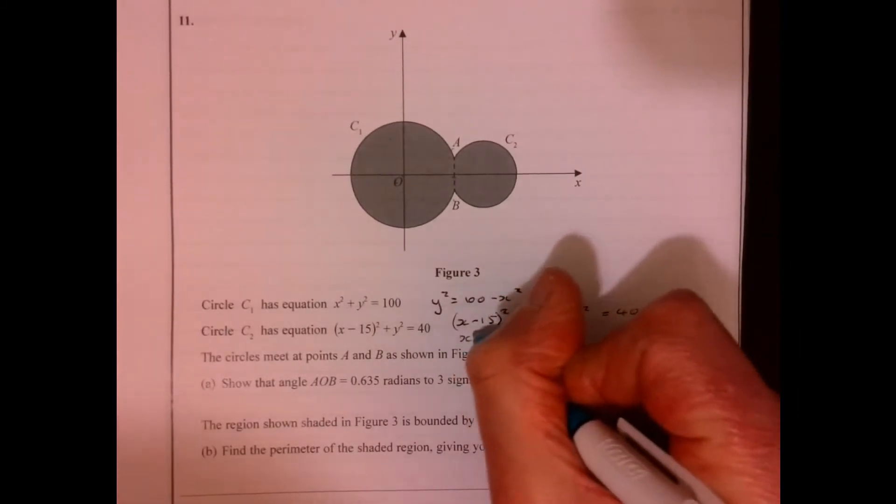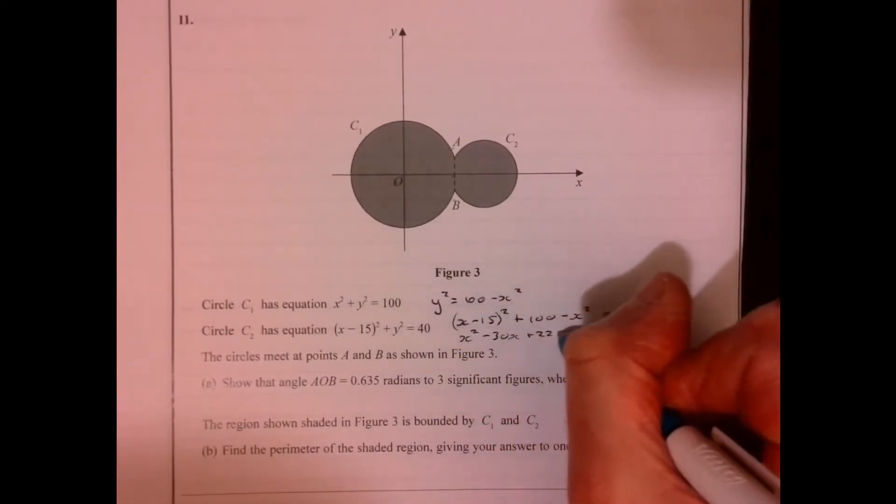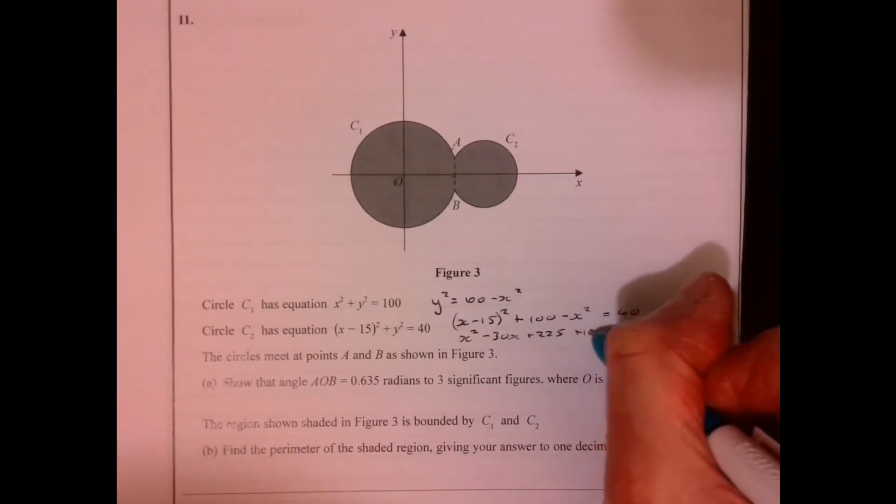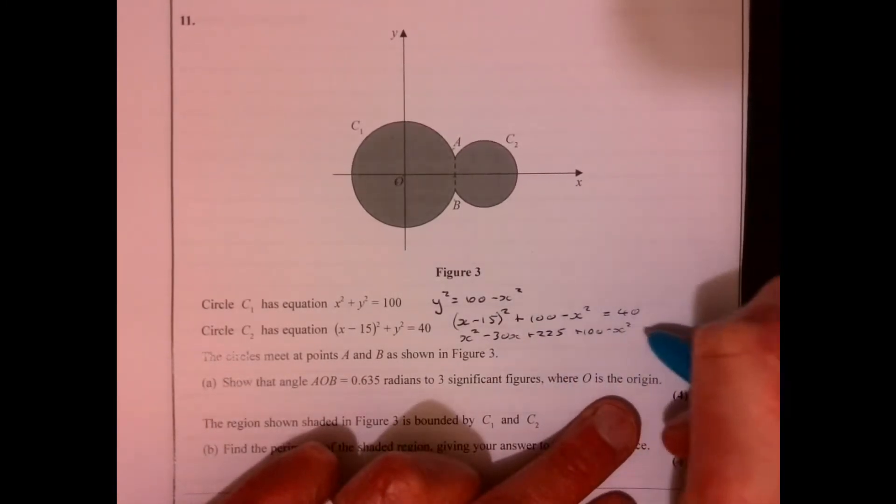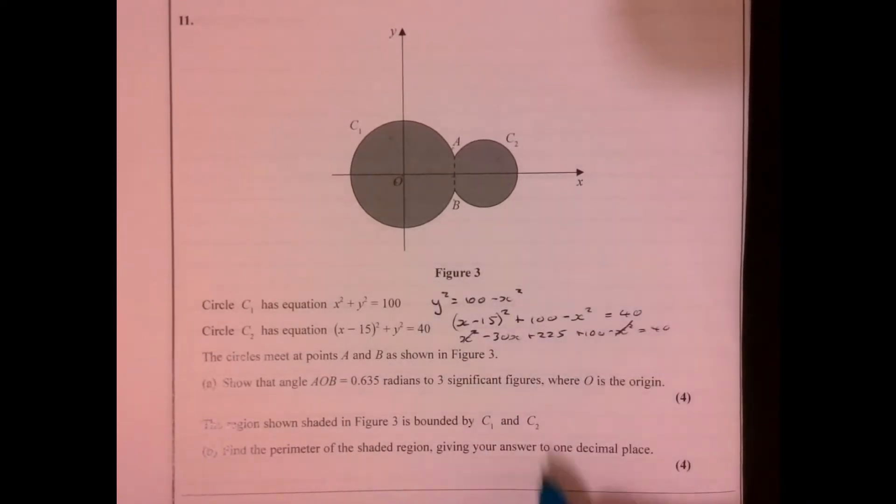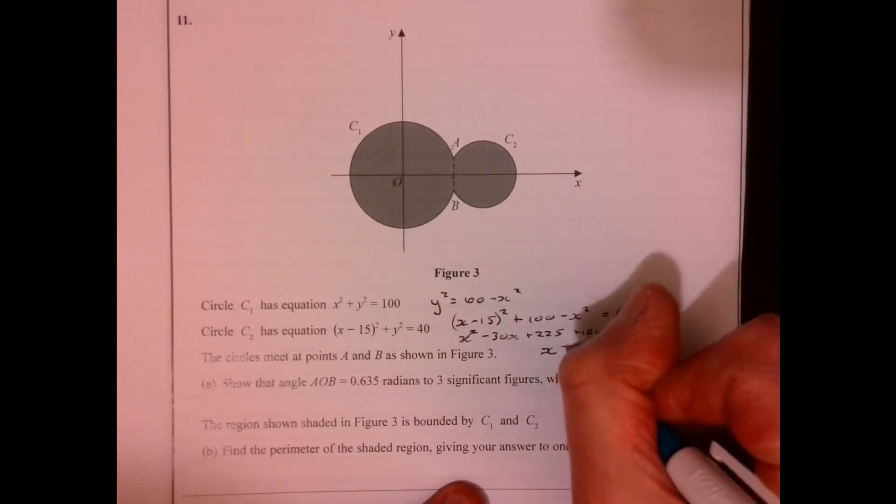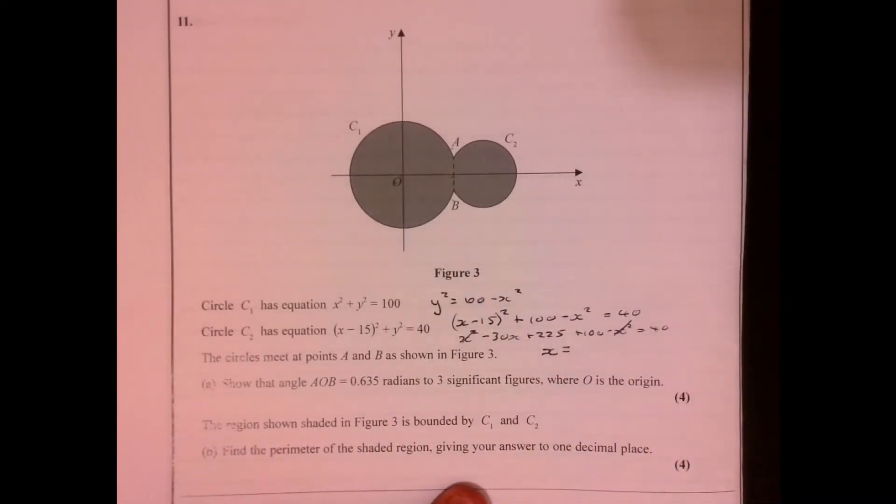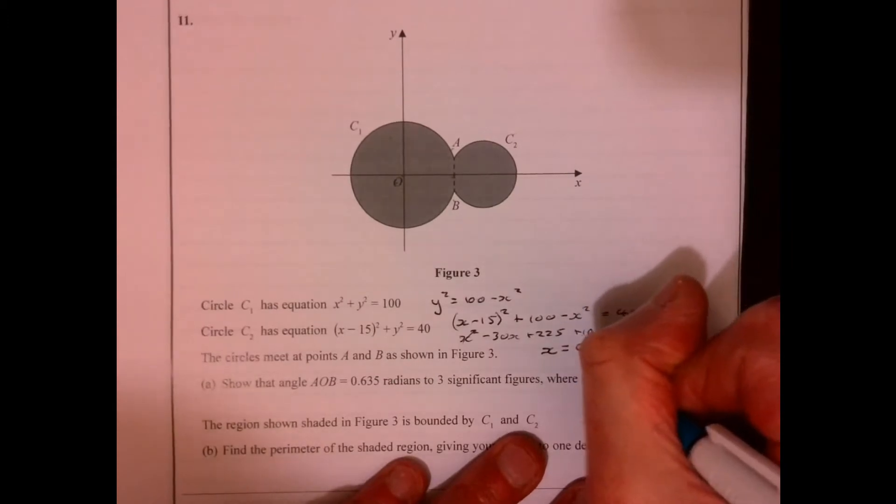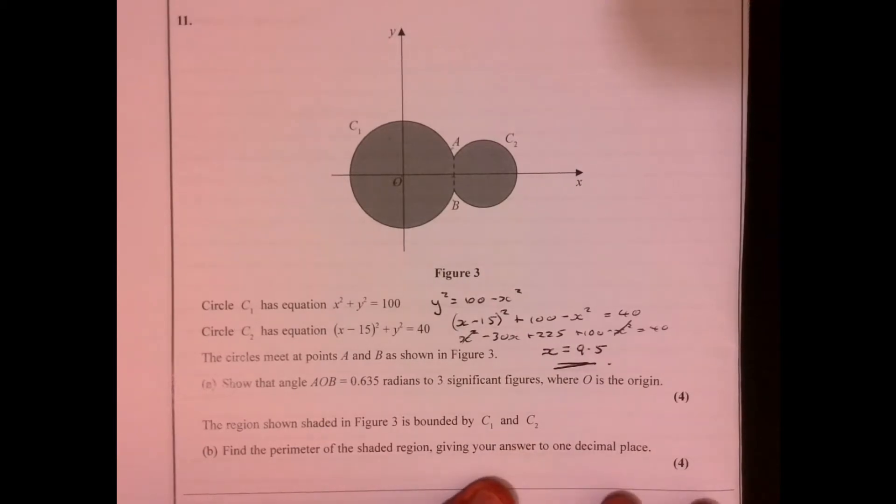So then that's going to give me x minus 15 squared plus 100 minus x squared equals 40. Multiply the brackets, we get x squared minus 30x plus 225 plus 100 minus x squared equals 40. Cross out the x squared, and if you just work through that now, you end up getting x equals 9.5.